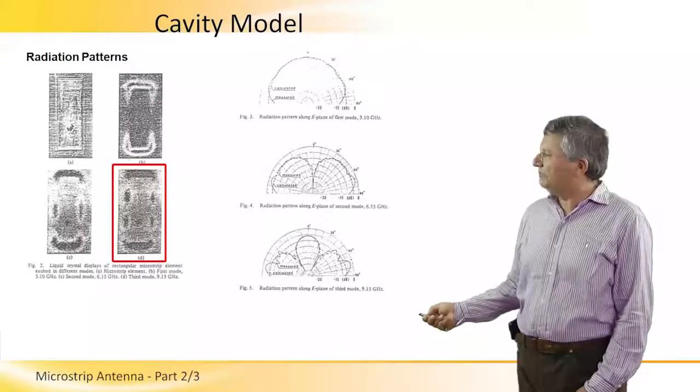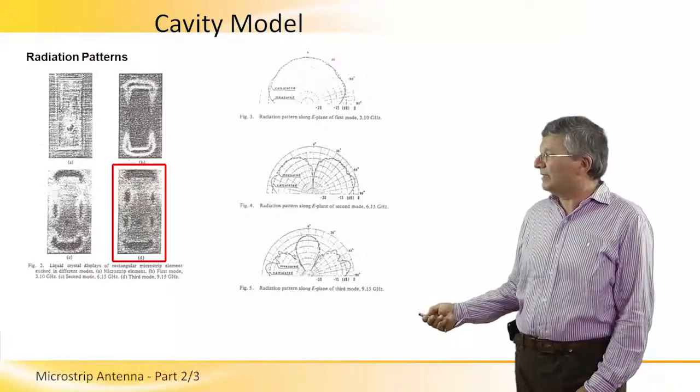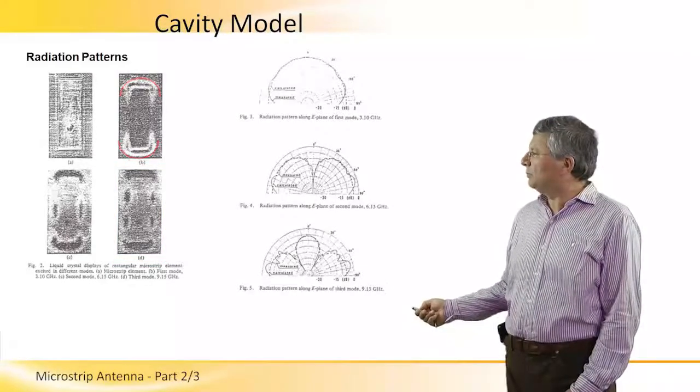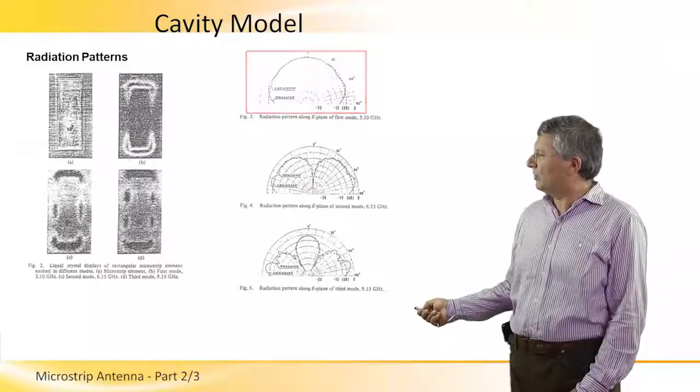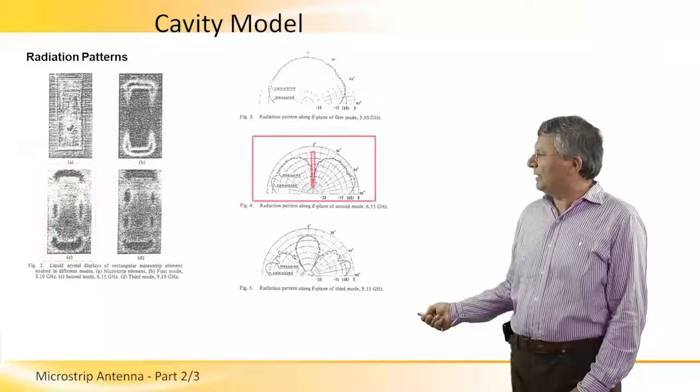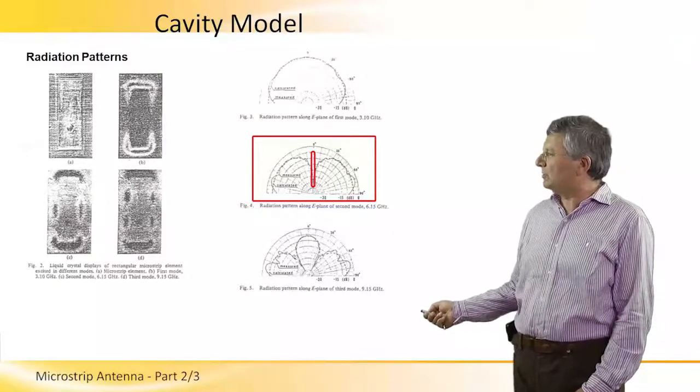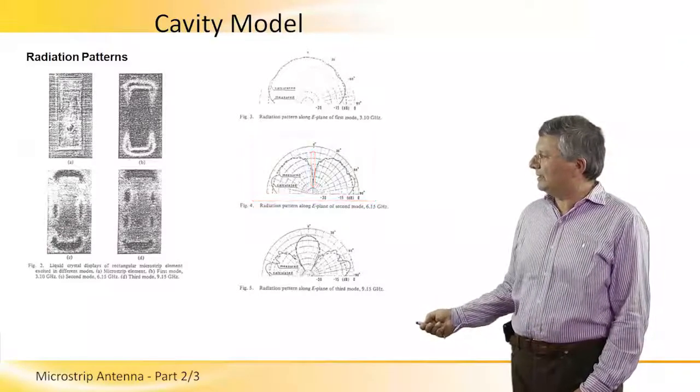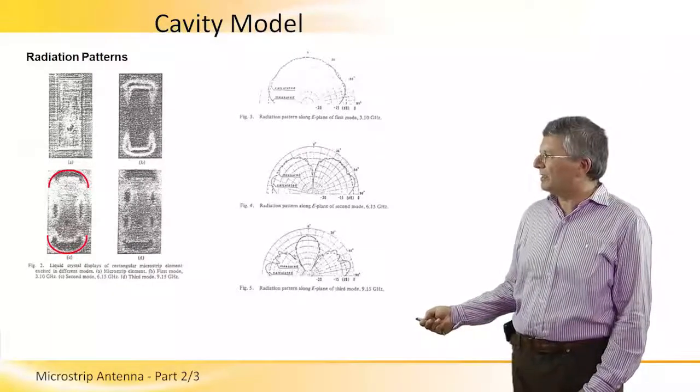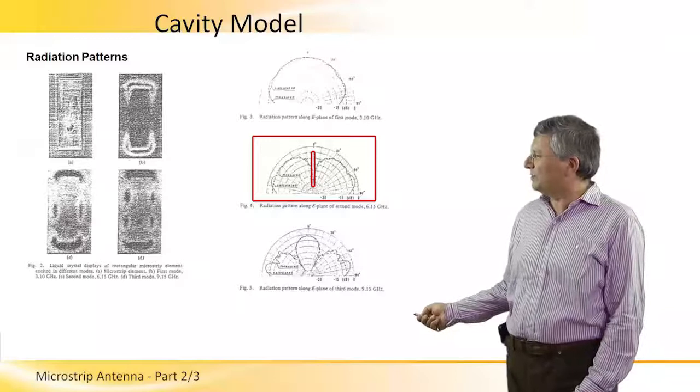This is actually translated to the radiation pattern of each of those modes, such that for the dominant mode, we obtain this radiation pattern, which we have seen before, while for this mode, we obtain some sort of a null in the direction on the axis normal to the patch. And this is due to the fact that those two radiating slots don't combine in phase, but are reversed in phase.